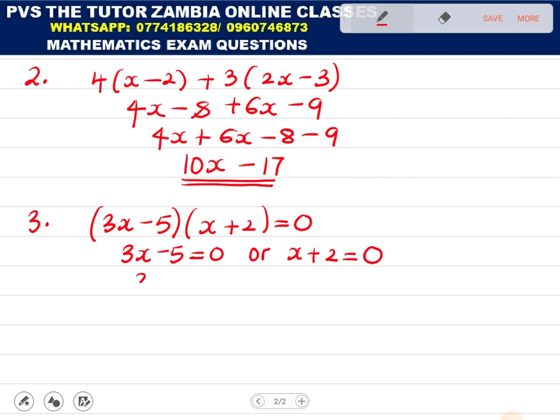Let's say 3x minus 5 be equal to 0 or x plus 2 be equal to 0 as well. Then you say 3x is equal to 5 or x is equal to negative 2. So here divide by 3 over 3. You get x is equal to 5 over 3 or x is equal to negative 2. This becomes our 2 answers that we're looking for.